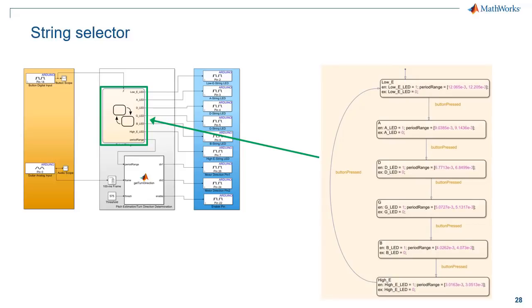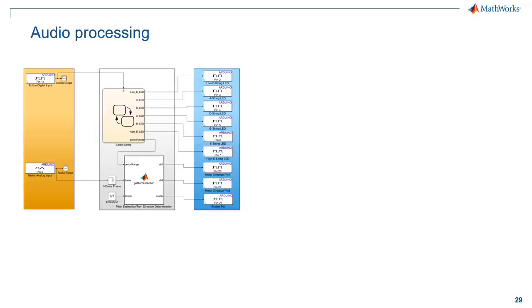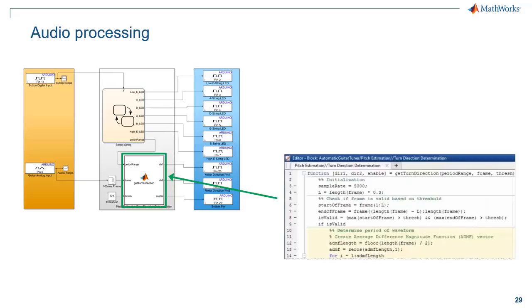Now digging in a little bit further into the string selector state flow chart, it's really pretty straightforward. So the way it's set up is that there are six states corresponding to each guitar string and the transition occurs when the button is pressed. And depending on the state that you're in, it assigns a period range which is then sent as the input to the MATLAB function block. And the MATLAB function block is really where the audio processing happens and is the real meat of the application. And again, this function determines the difference between the actual audio signal and the reference for the particular string that's selected. And it determines which direction to then turn the servo motor and how much based on the difference between those signals.